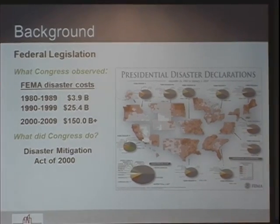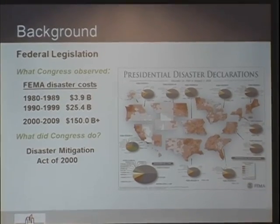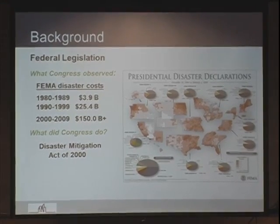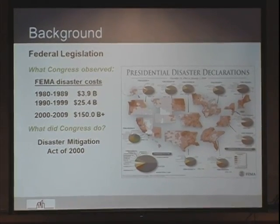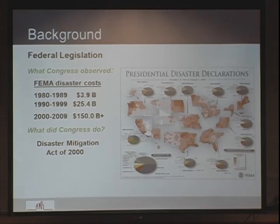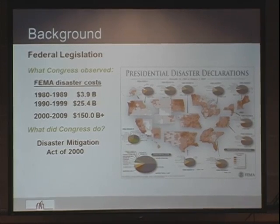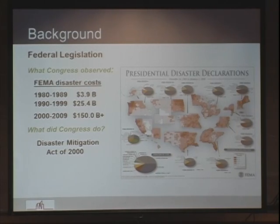Here's the background. Congress observed that they're paying more money for hazards. In the 80s, they paid the laughable amount of almost $4 billion. They got concerned when in the 90s that number jumped up to $25.4 billion. And then Hurricane Katrina. So they realized they needed to do something about this, and they passed the Disaster Mitigation Act of 2000.